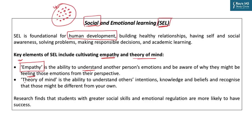The article also highlights the concept of theory of mind, which is the ability to understand others' intentions, their belief system, their knowledge, and to recognize that those might be different from your own — and hence acceptance. As part of your GS Paper 4, you study many theories and research which prove that greater social skills and emotional regulation are more important determinants of a person's success rather than simply possessing knowledge and information.